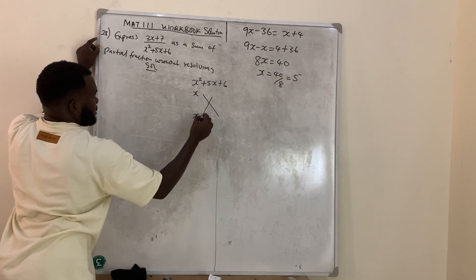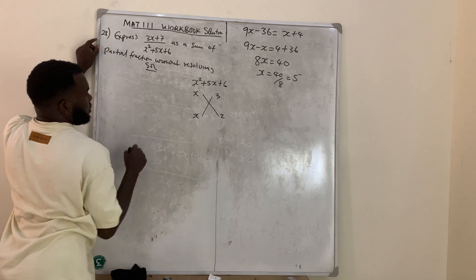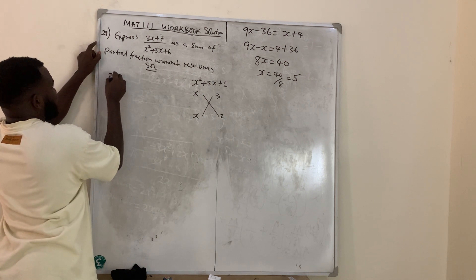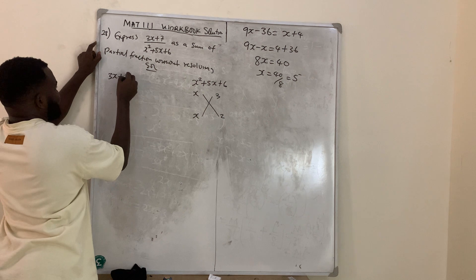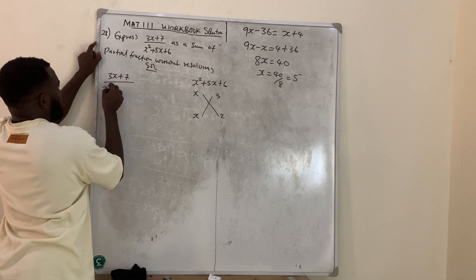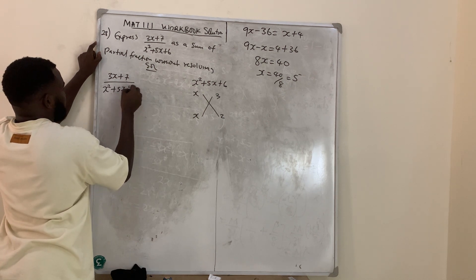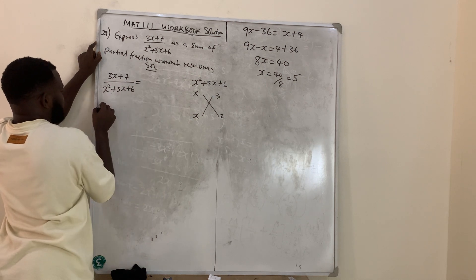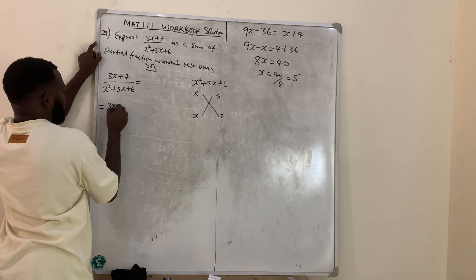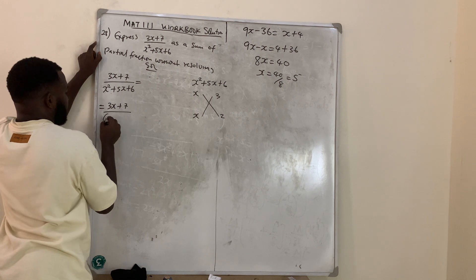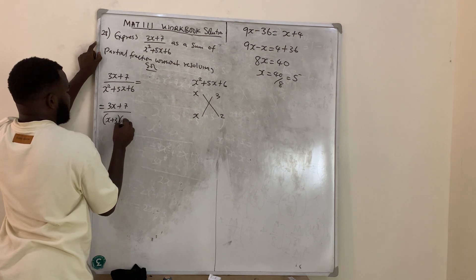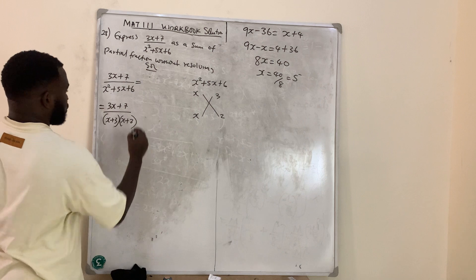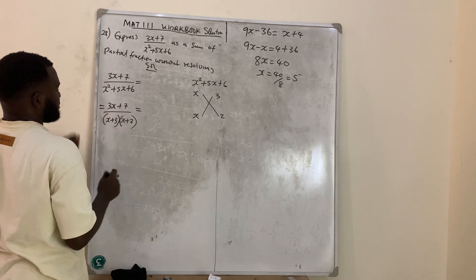So x here and x here — the factors are 3 and 2. So (3x + 7) all over (x² + 5x + 6) is the same thing as (3x + 7) all over (x + 3)(x + 2). Use your own method of factorization — it's still the same thing.